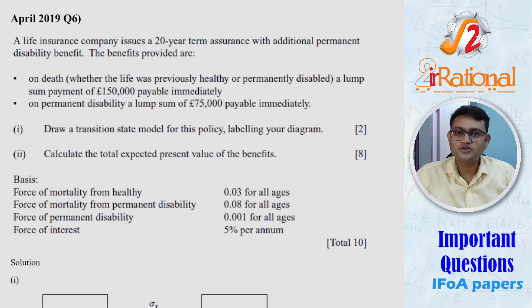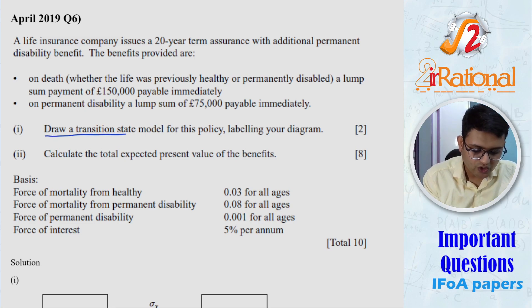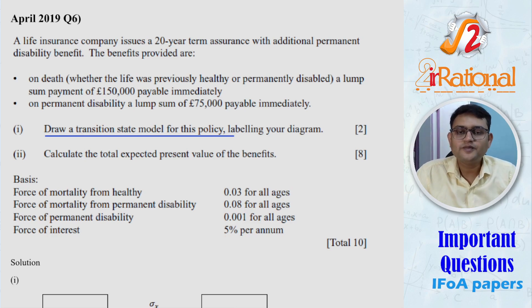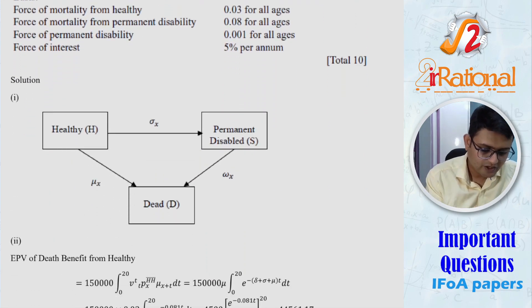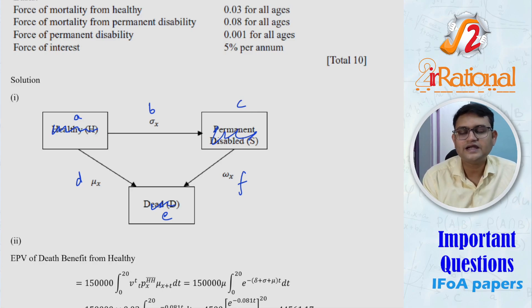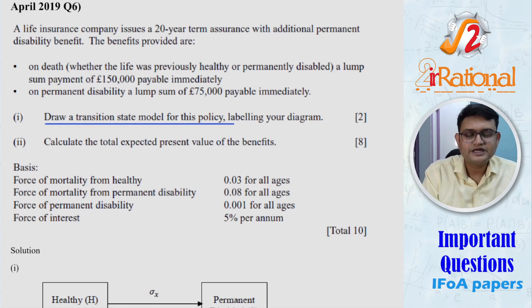The first question we are going to see is April 2019 question number 6. The one thing you should remember is 2019 papers were offline papers, that means they were written on paper. So there might be some elements in the question that might not be asked in our online examination. Like in this question we have to draw a transition state model. Now they would not be asking you to draw any kind of diagram. They might give you a diagram where they might not label these and just ask you to label them. They might just give you a, b, c, d, e, f and just ask you what is a, b, c, d, e, f and label it properly.